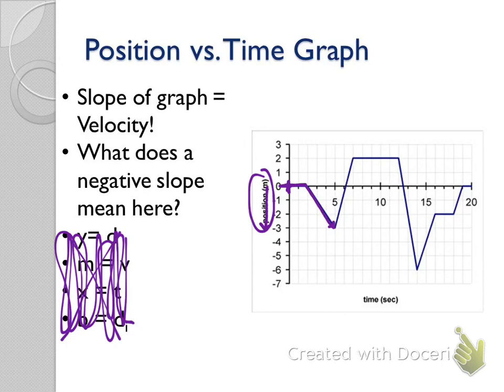They're moving backwards at a constant speed. When we cross the x-axis, that's when we've gotten back to our starting point. If this person started here, moved negative three meters, and then moved past their starting point to two meters — that's all that's happening. That zero line just means that's where the starting point is.